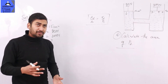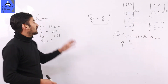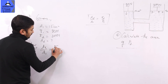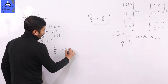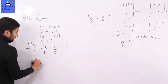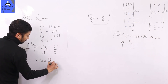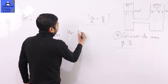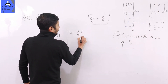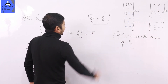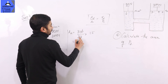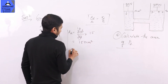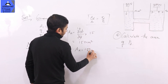Using the formula: A2 divided by A1 equals F2 divided by F1. This implies A2 equals F2 divided by F1, multiplied by A1. Substituting the values: A2 equals 300 divided by 30, multiplied by 15, which gives A2 equals 150 cm².